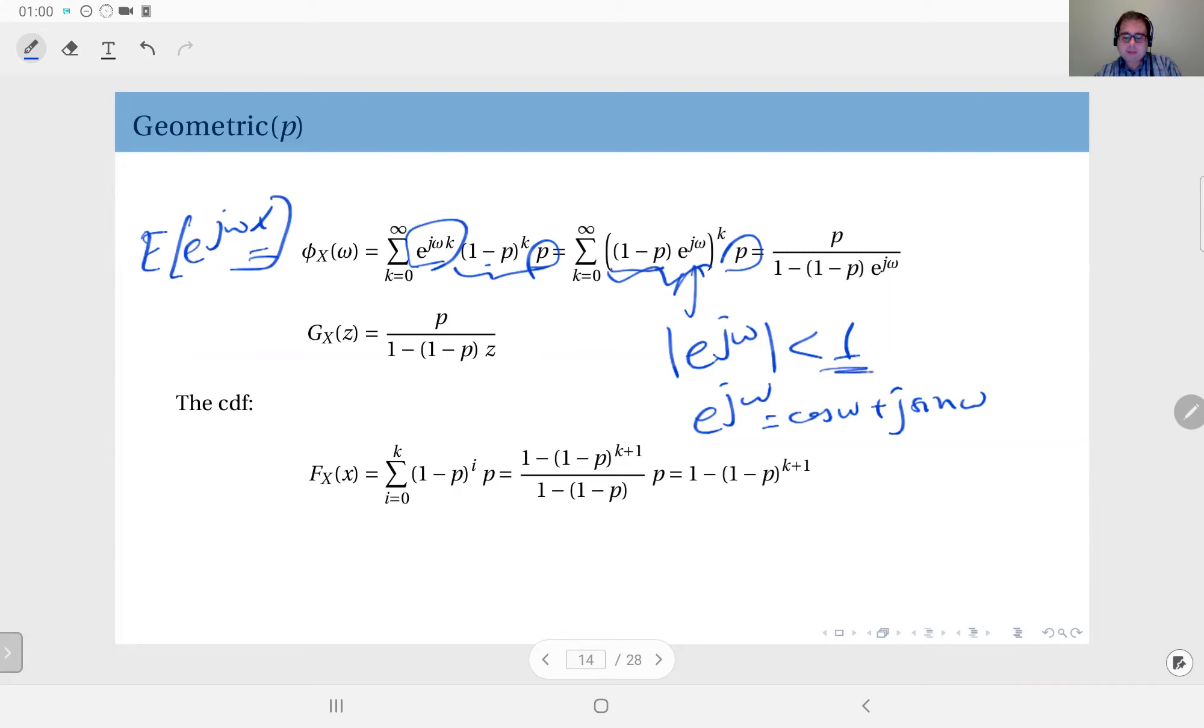And therefore, since this is also constrained by 1, the product of the two will be strictly less than 1 in magnitude. Therefore I can use that result earlier to write this sum as 1 over 1 minus this thing. So when we multiply it by p, you get p over 1 minus 1 minus p times e to the power jω.